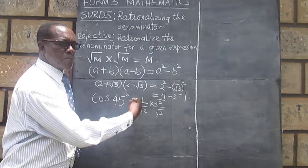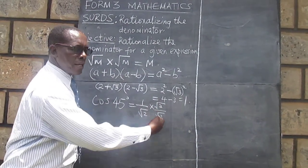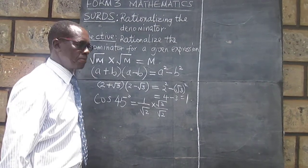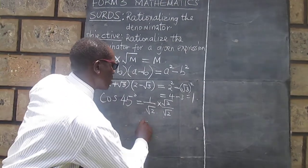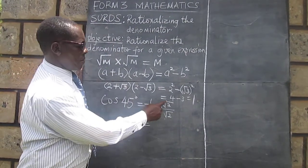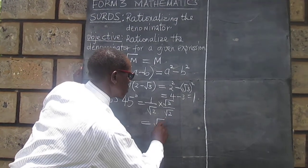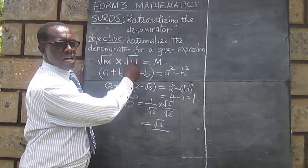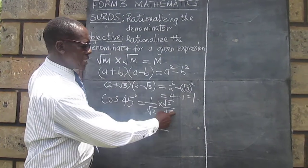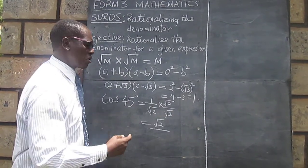Therefore we will not have changed the expression we were given because we have simply multiplied it by 1. This will now give us, this 1 multiplied by root 2 will give us root 2. And from this expression here, the denominator is now rational.